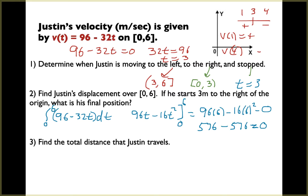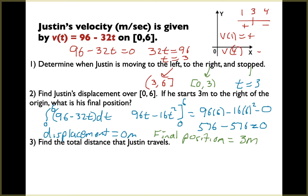Our displacement is zero meters. Since he starts three meters to the right of the origin, his final position is three meters. Justin moved but came back to where he started, so his displacement was zero meters and his final position is three meters.